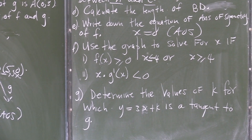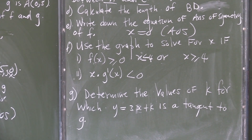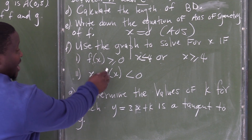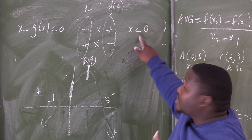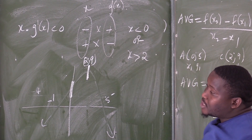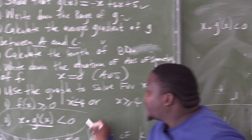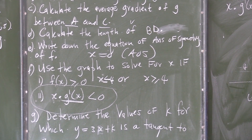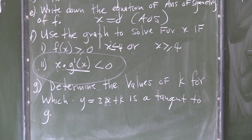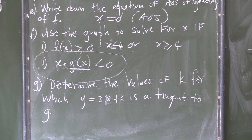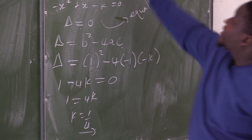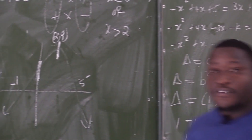Find the values of x without solving, but by looking at the graph, where x multiplied by g prime of x is less than 0. x is less than 0, or x greater than 2. So, this is the solution. What was very important to note here is the relationship between the derivative and the graph of g. Determine the values of k for which y equal to 3x plus k is a tangent to g. k must be 1 over 4. It means if k is 1 over 4, then this line is going to be a tangent to the graph of g.